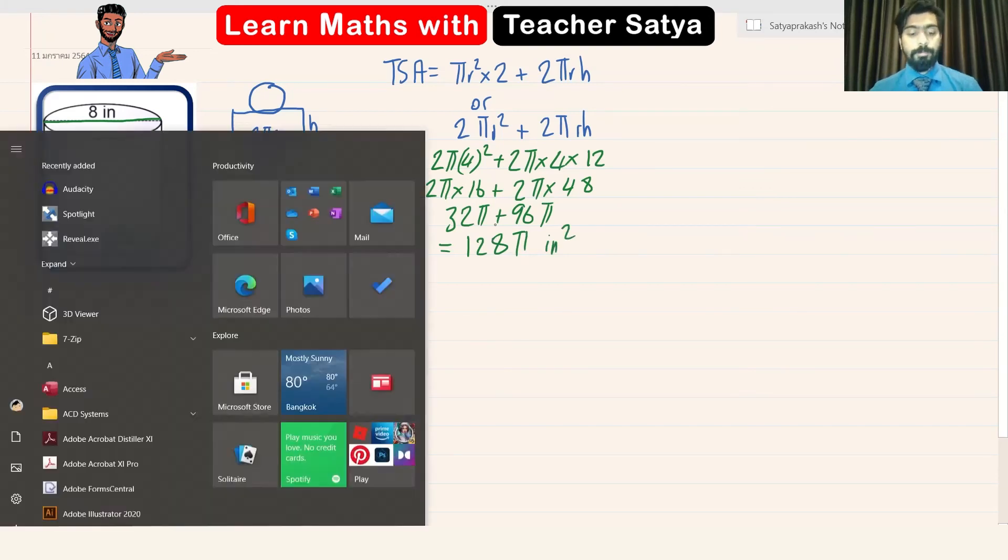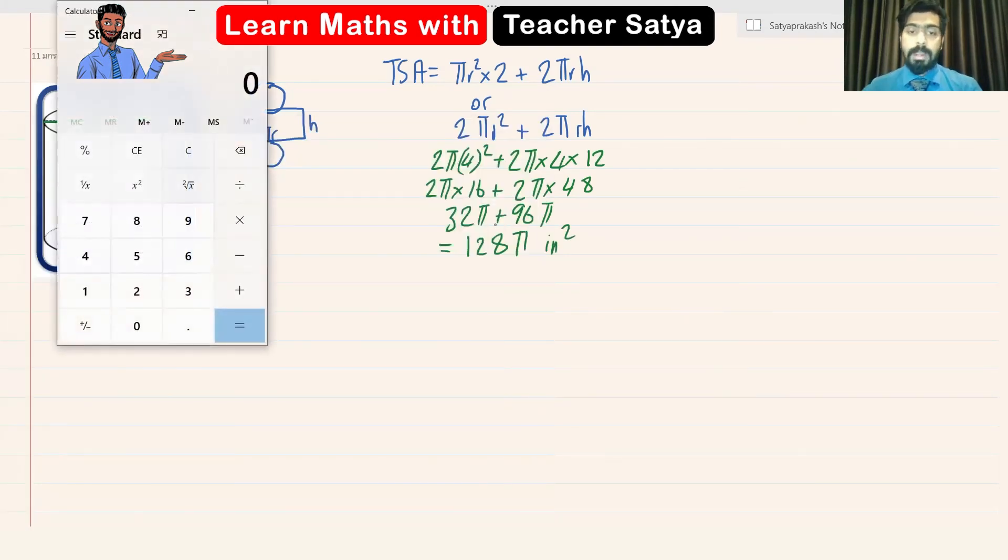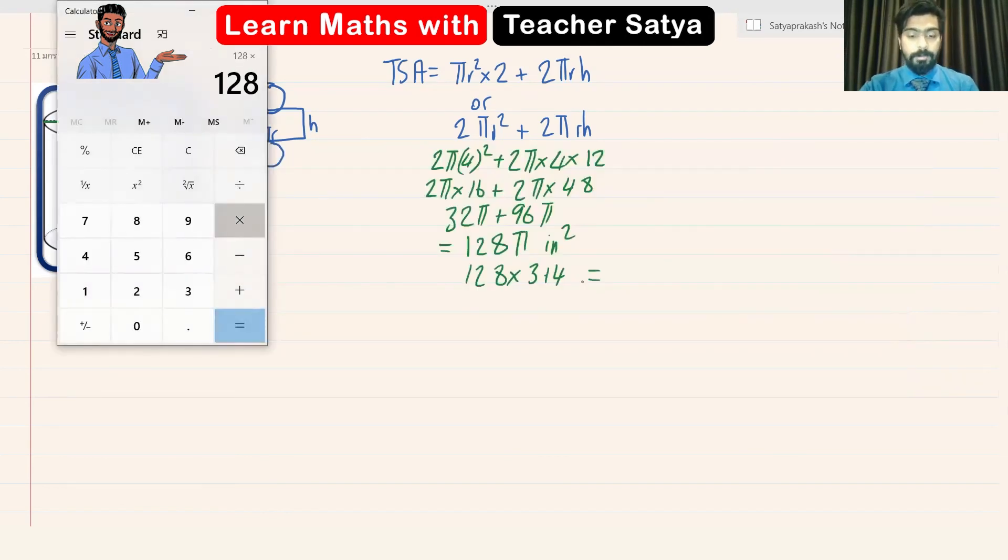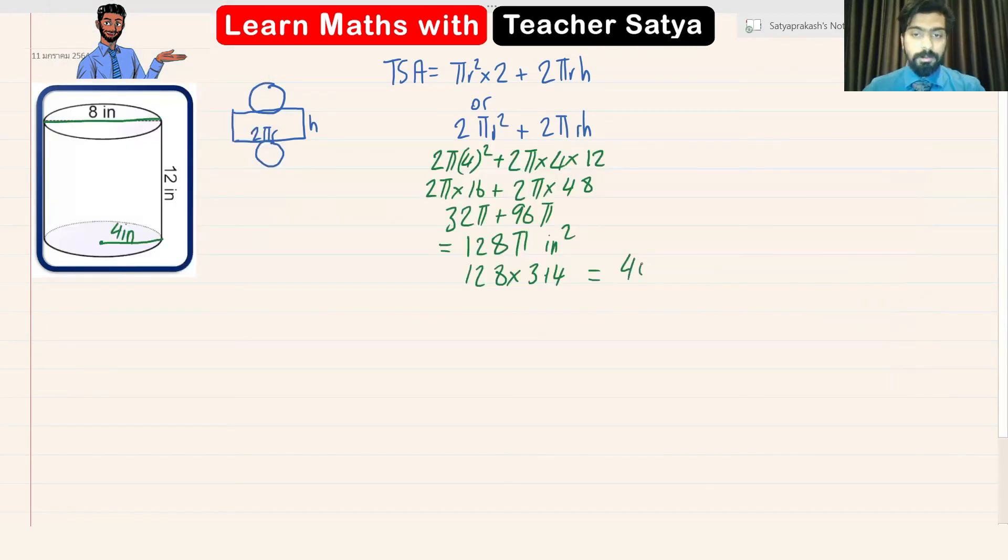Now if we get rid of pi and let's say instead of pi, I'm going to use three point one four. So one two eight multiplied by three point one four would give us, let me use the help of a calculator, so four zero one point nine two inch squared. All right, guys?